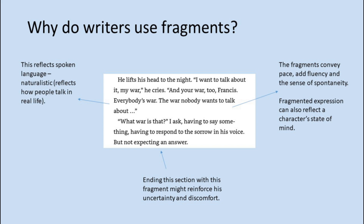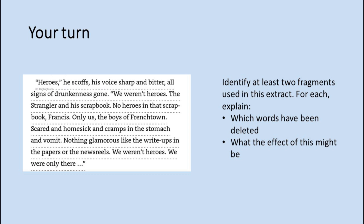Those are useful ways of explaining what a writer is doing by using fragments. This is where I want you to have a go. On the next slide we have something from later on in the chapter — Arthur Rivier again talking about heroism and their experiences in the war. Identify at least a couple of fragments, and for each explain what's been taken out, what words have been deleted, and what the effect is. You might look back at the previous slide for ideas. Pause the video, get your answer down in your book — I would write it as an exploded quote — and that's one for your teacher to check.